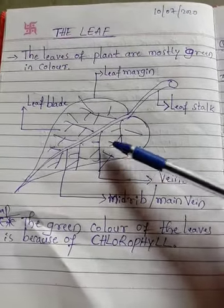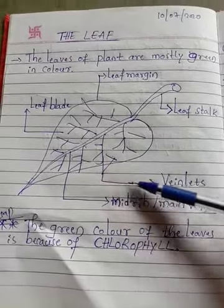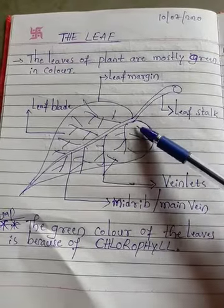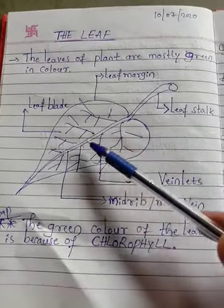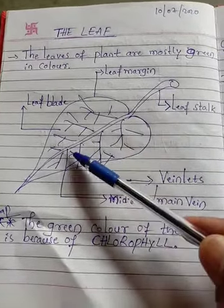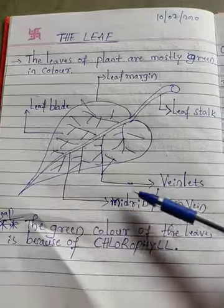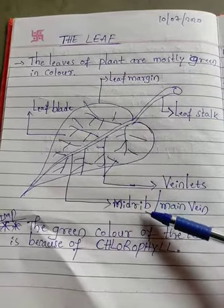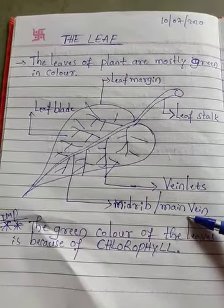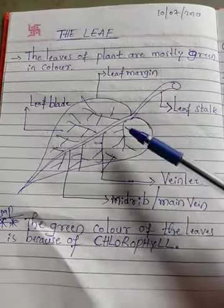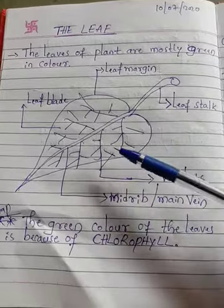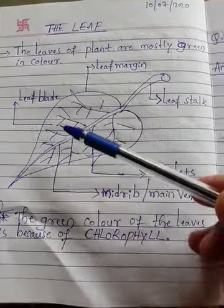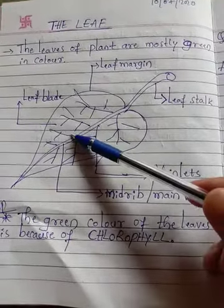These are the veinlets, and this central part we call the midrib, or another word for it is main vein. This is the main vein, and these are the veinlets.